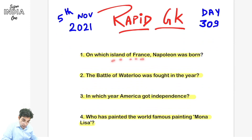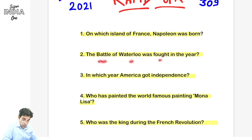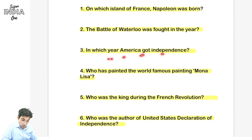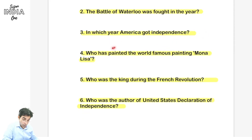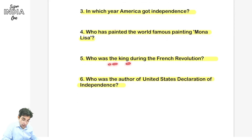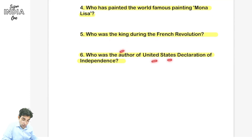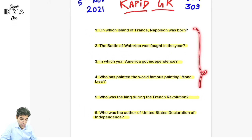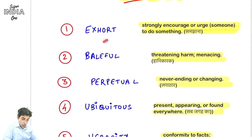Present day Israel mein British Indian Army ne ladi thi Battle of Haifa. Aaj ke sawaal hain: on which island of France Napoleon was born? The Battle of Waterloo was fought in which year? In which year America got independence - America bhi British colony tha. Who painted the famous painting Mona Lisa? Who was the king during the French Revolution? Who was the author of the United States Declaration of Independence? So these are six questions for today.